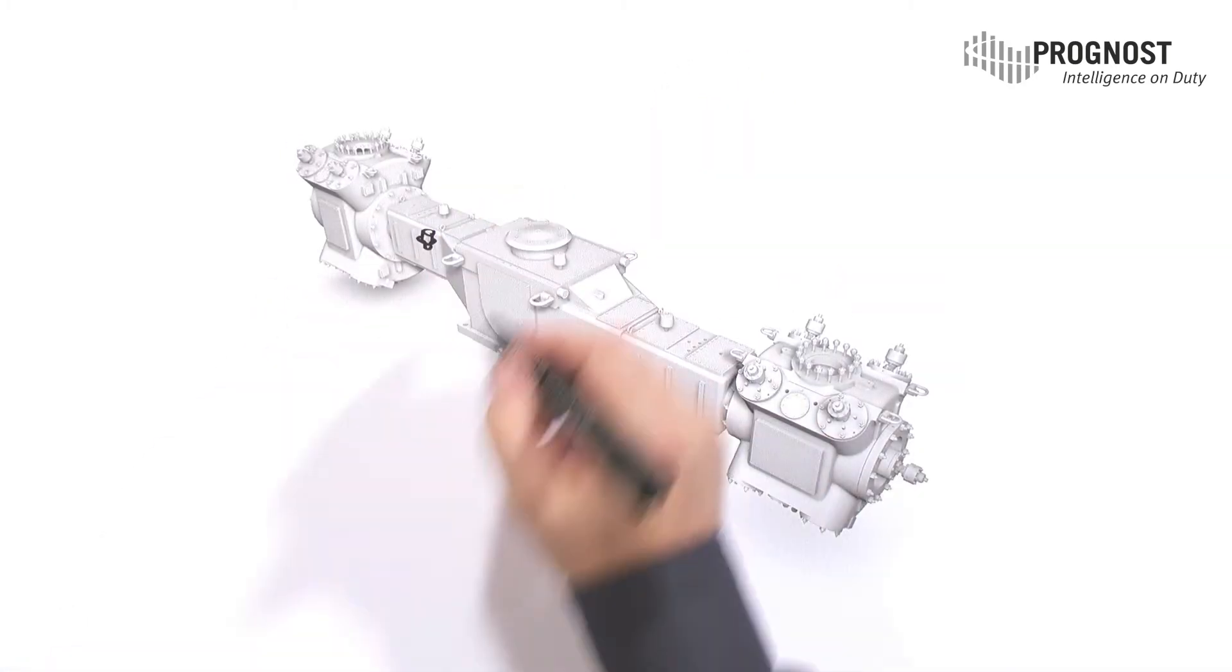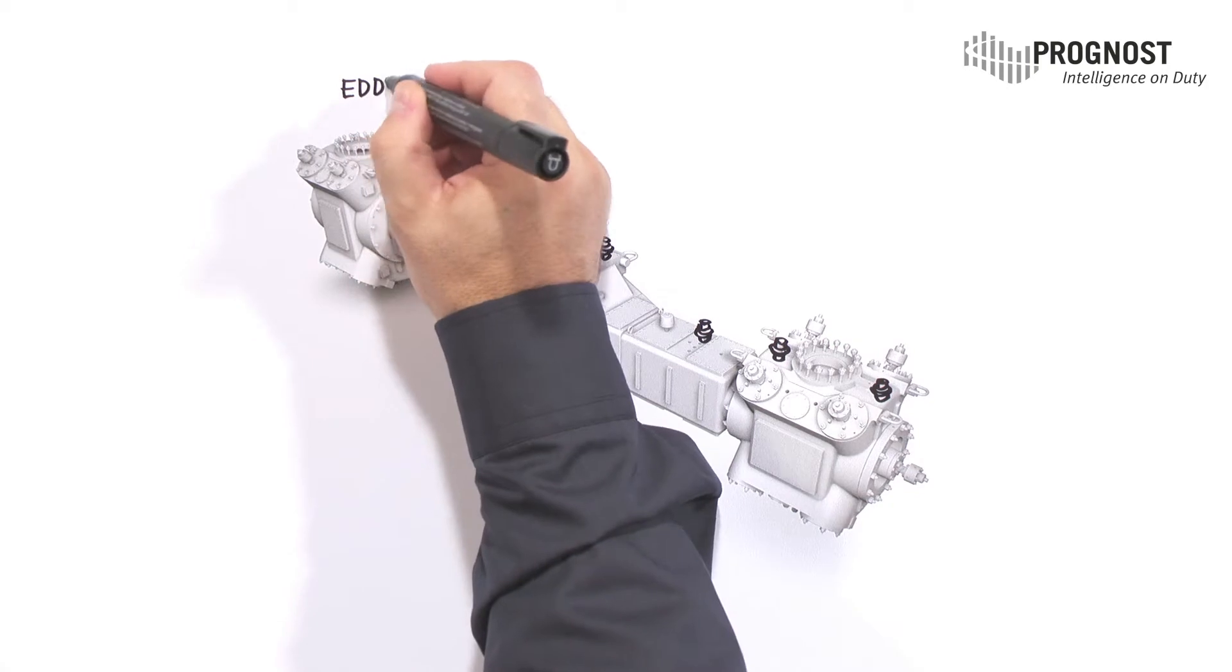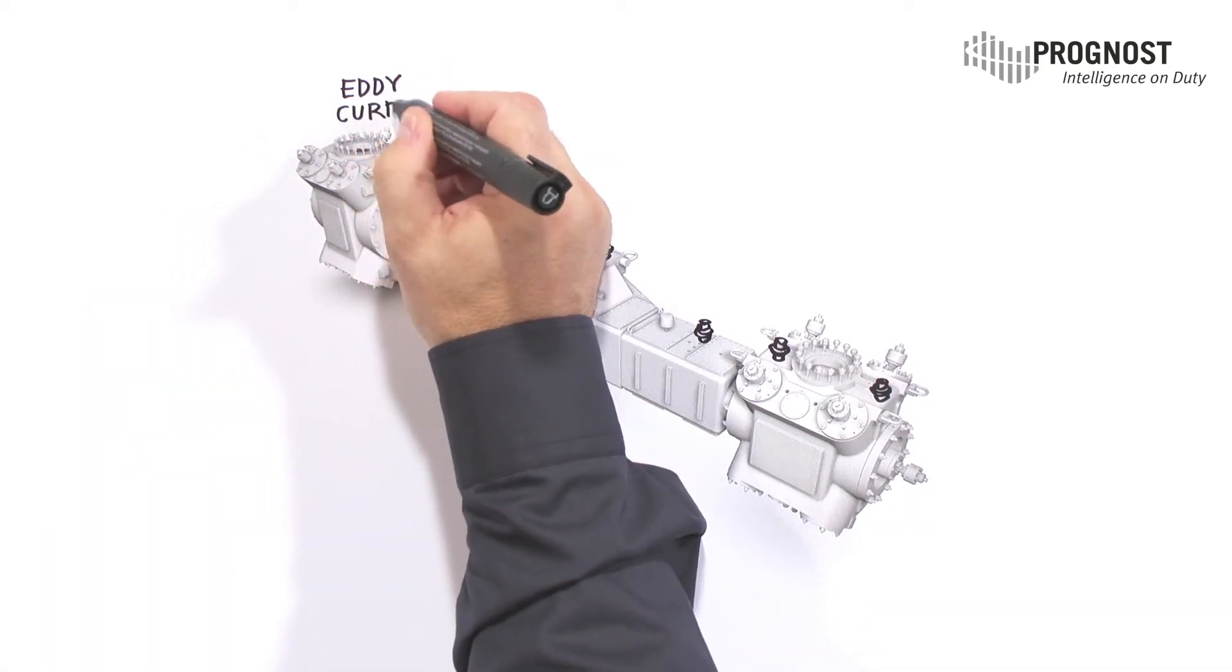This is a demanding task. Measuring loops are complex and consist of sensors which produce different signals: 4 to 20 milliamps or voltage, ICP or eddy current, and others.